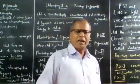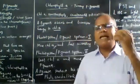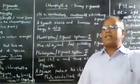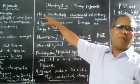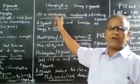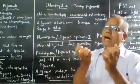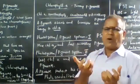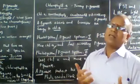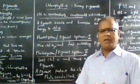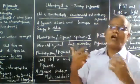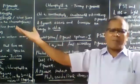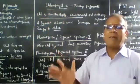All the accessory pigments — chlorophyll B, xanthophyll, and carotenoids — absorb and transfer energy to chlorophyll A. They capture light energy as photons (quanta) and transfer it to the primary pigment.